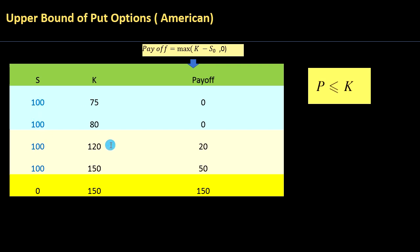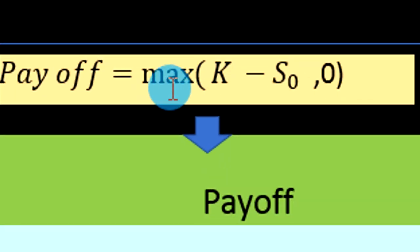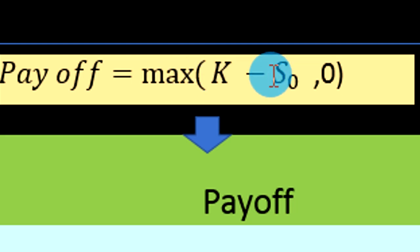As I'm showing here, these put options are quite valuable when the underlying stock is trading at $100 but the strike is $120. You can sell this stock — which is trading at $100 in the market — for $120, and therefore make a payoff of positive $20. A put option is valuable as the strike increases beyond the underlying.